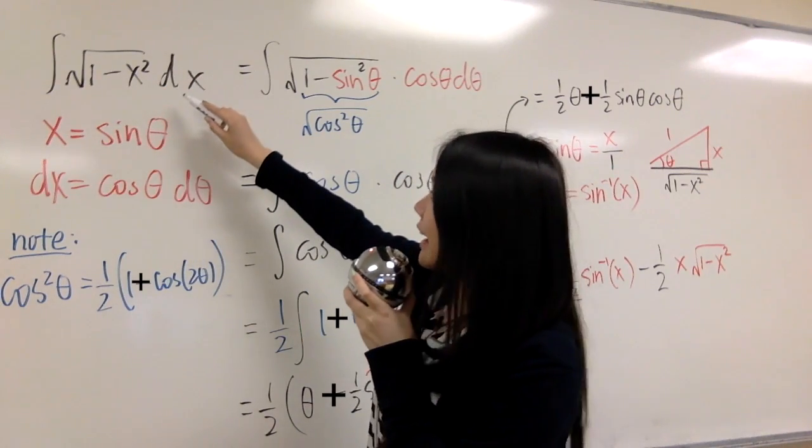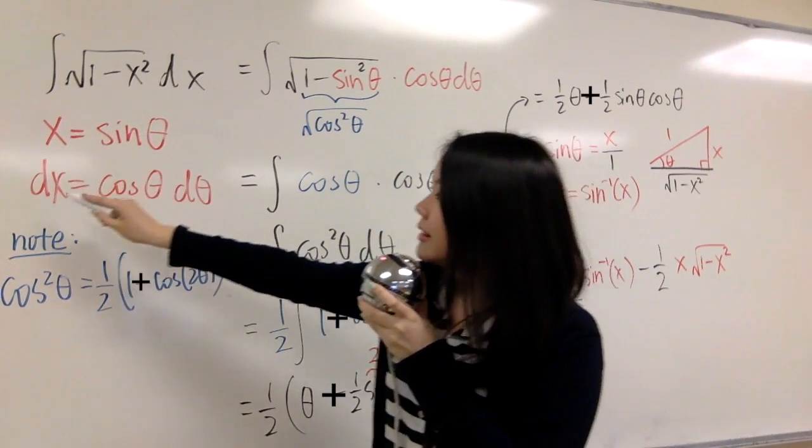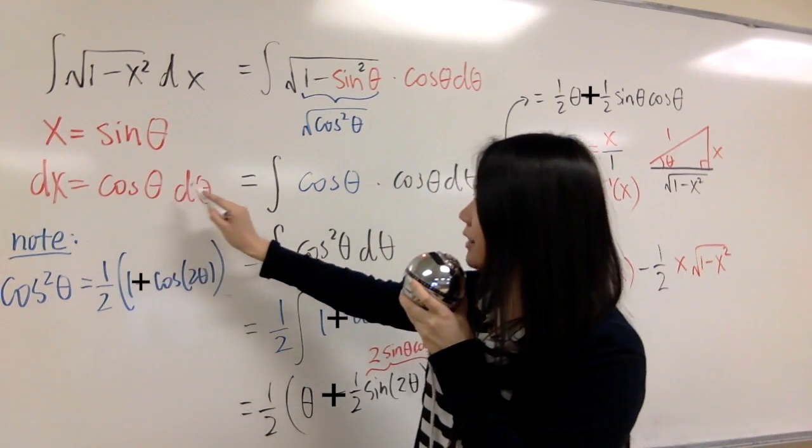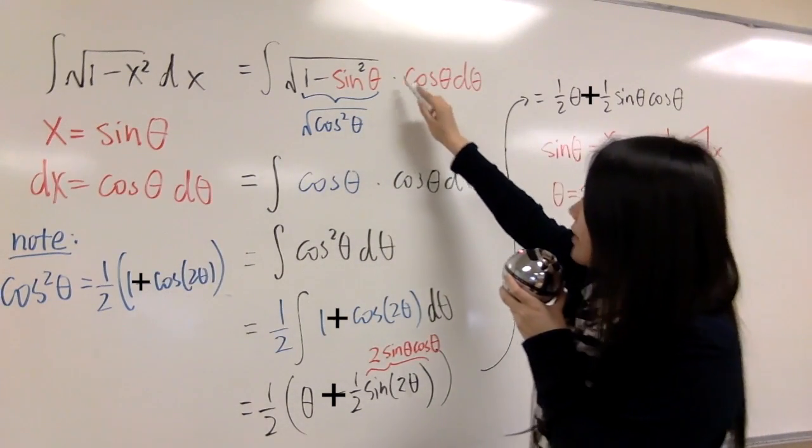Don't forget to convert dx to d theta, so when x equals to sine theta, dx is cosine theta d theta, and then put it here, that's dx.